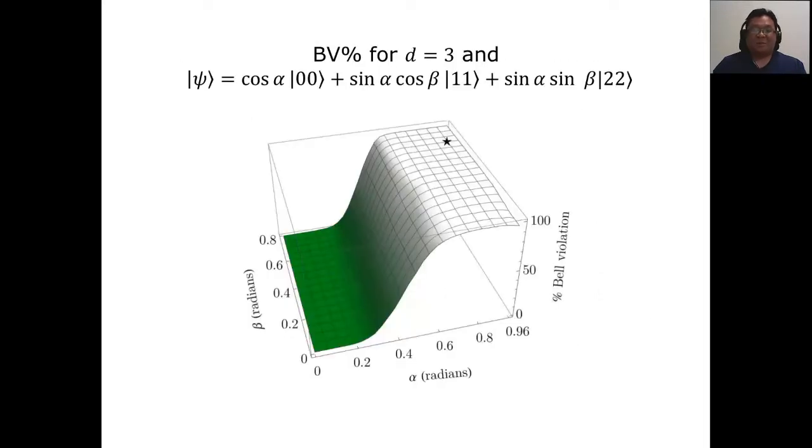Here, we also tested whether we can get Bell violations if the state is not maximally entangled. If you write the state in the Schmidt basis, then you can have two angles, alpha and beta, to parameterize it. We get here the probability of violation for different values of alpha and beta, which go from zero to something close to pi over 4. The maximally entangled state is at the top right of this plot. The star indicates the non-maximally entangled state that gives the largest violation of the CGLMP inequality. But what you see here is that there's actually a large region of states where you can get a Bell violation very close to 100%.